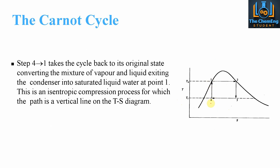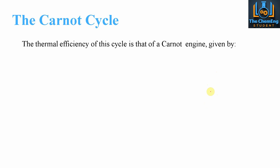At point four we still have a mixture of vapor and liquid. By increasing the temperature we reach the saturation point for Th, so we no longer have vapor — we have saturated liquid. This is the isentropic compression process, because again we have constant entropy throughout this step.